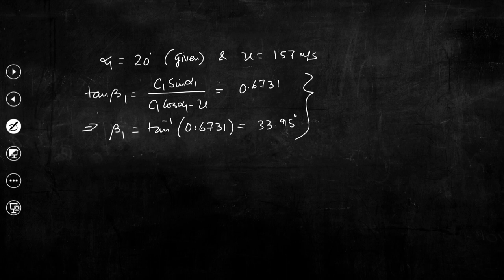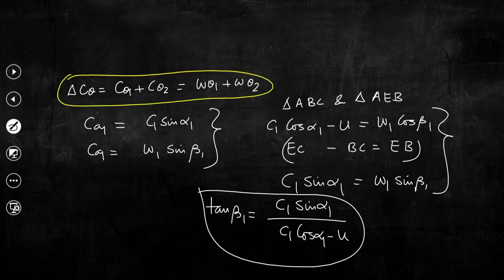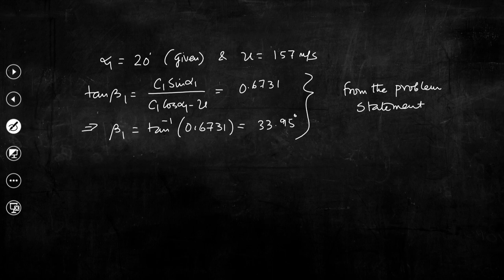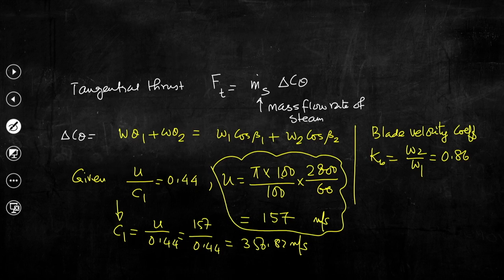Having calculated beta_1, we use the problem statement: the blade outlet angle is 3 degrees less than the blade inlet angle. Therefore beta_2 equals beta_1 minus 3 degrees, which gives beta_2 equals 30.95 degrees.